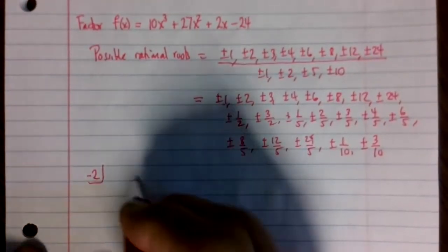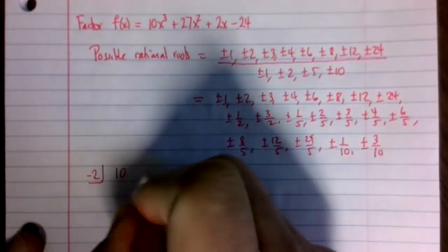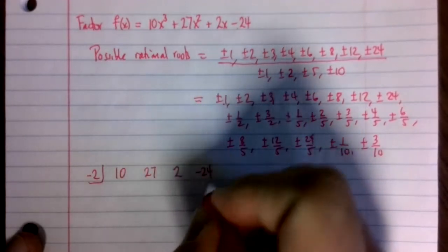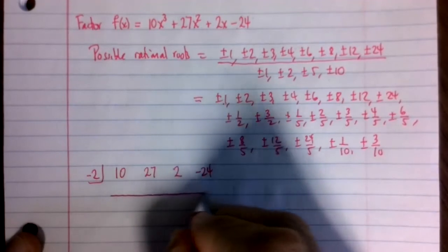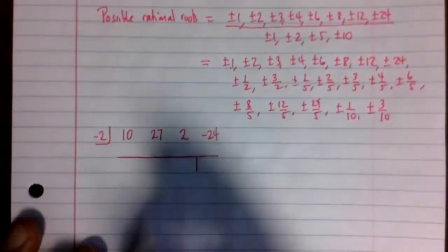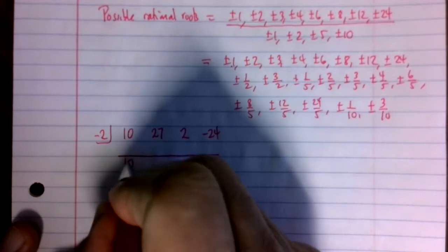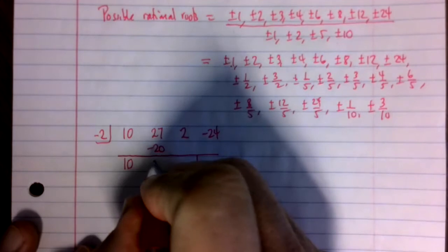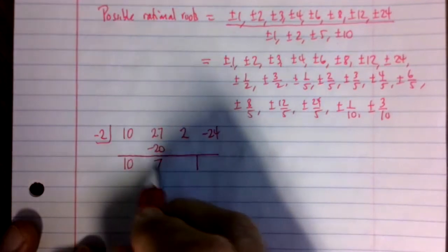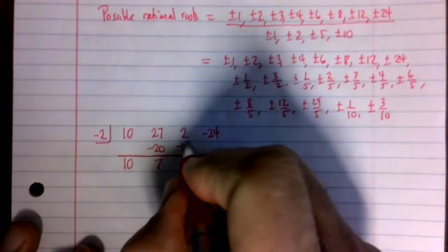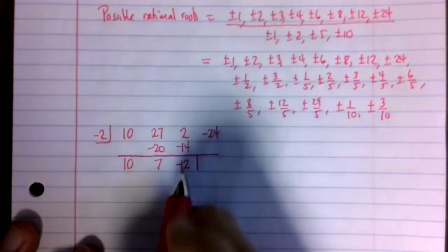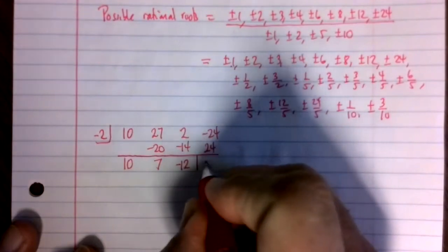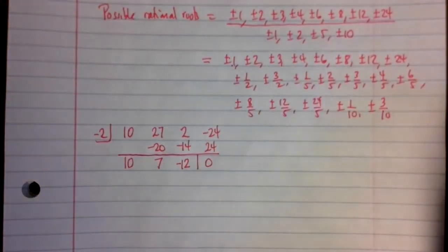So I do synthetic division. I'm going to try out negative 2. My polynomial is 10, 27x², 2x minus 24. And I'll use synthetic division to confirm that negative 2 is a root. So for synthetic division, bring the 10 down. 10 times negative 2 is negative 20. Add these, 27 plus negative 20 is 7. Multiply. 7 times negative 2 is negative 14. 2 plus negative 14 is negative 12. Negative 12 times negative 2 is plus 24. And I get a remainder of 0, and therefore this is a root.